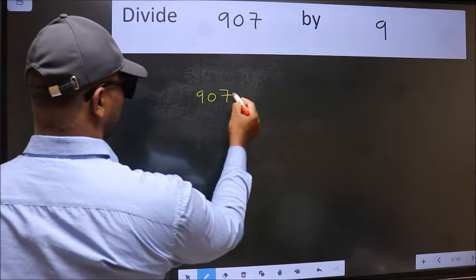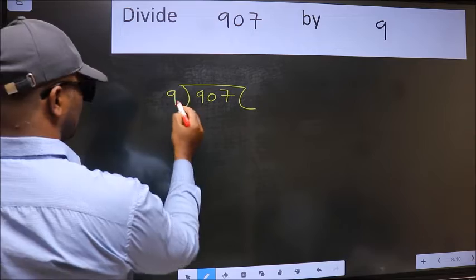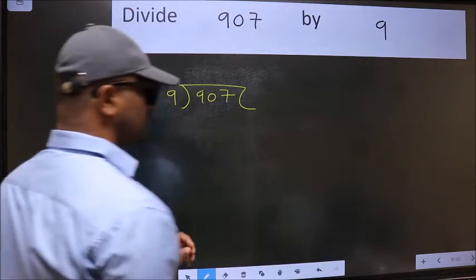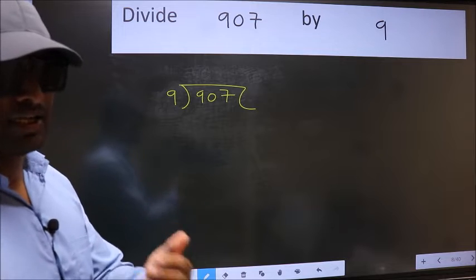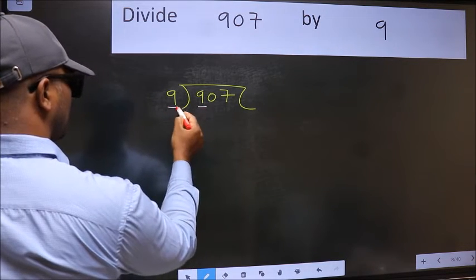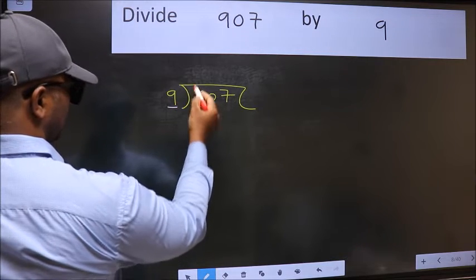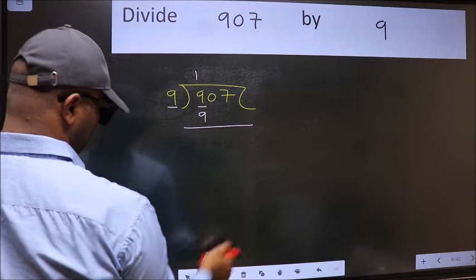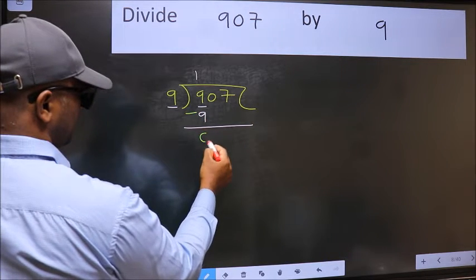907 and 9 here. This is your step 1. Here we have 9, and here also 9. When do we get 9 in the 9 table? 9 once is 9. Now we should subtract. We get 0.